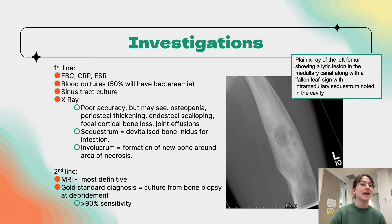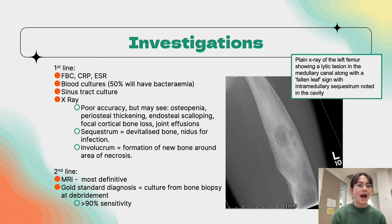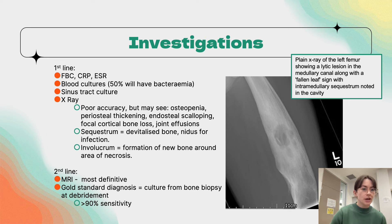To detect the organism, we take blood cultures, though only 50% will have bacteremia. If there is a sinus tract and it is discharging, we can culture that. An x-ray is reasonable in the first instance — quick and easy to order — however it has poor accuracy. You may see osteopenia, periosteal thickening, joint effusions, and features such as a sequestrum or involucrum.